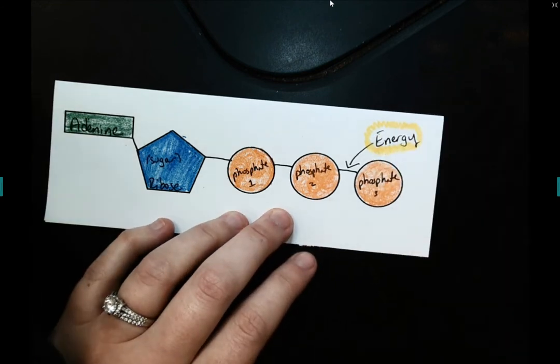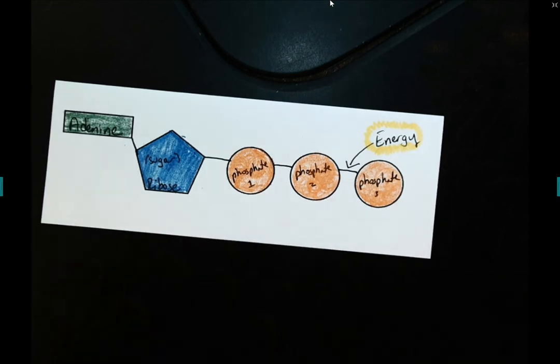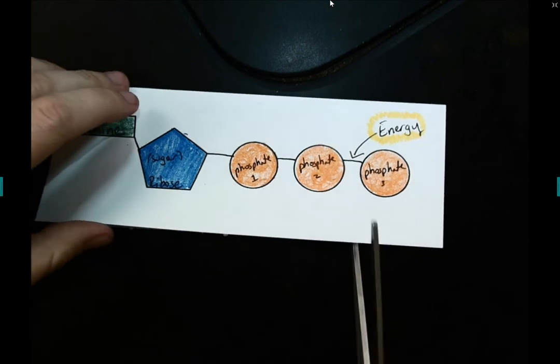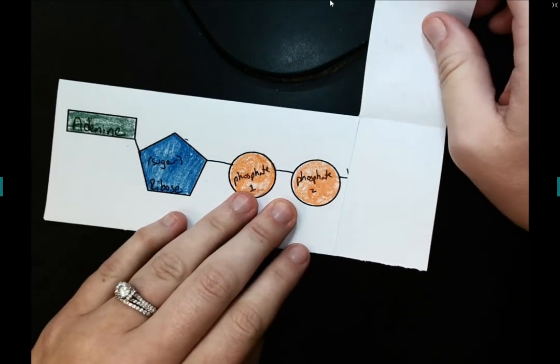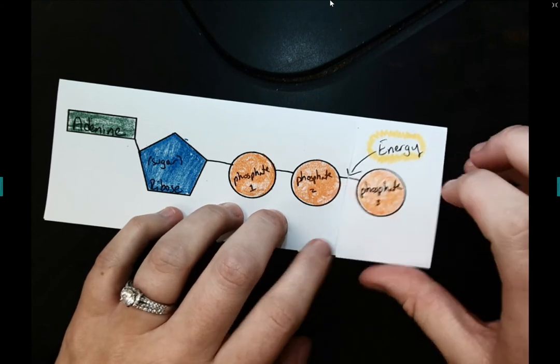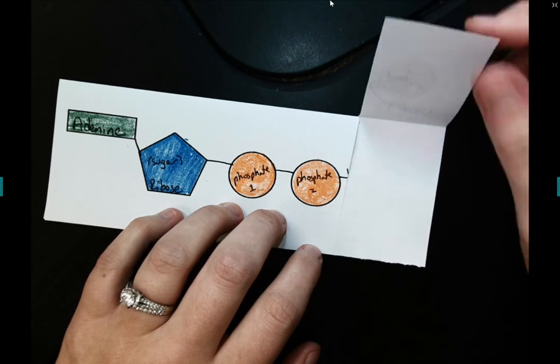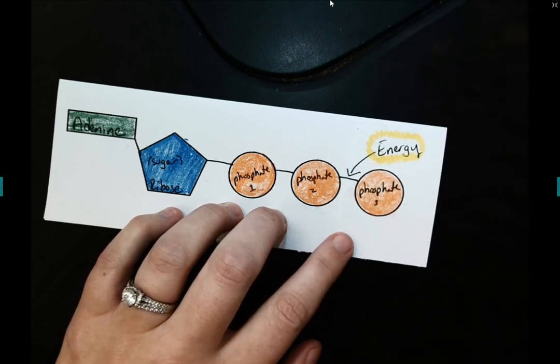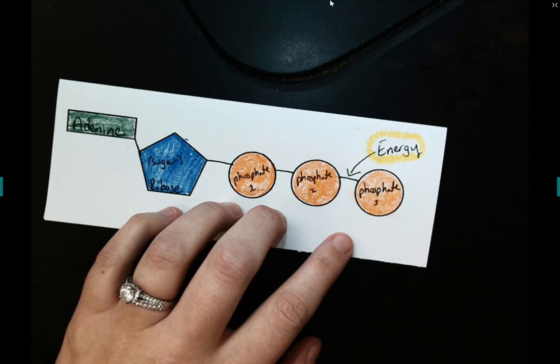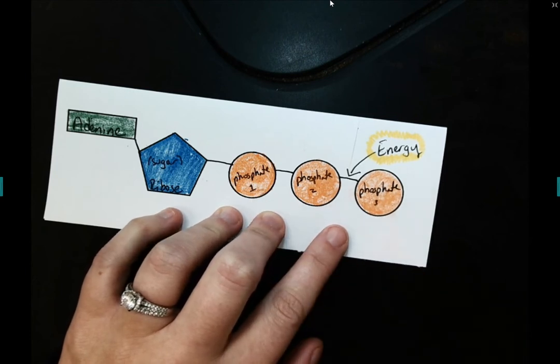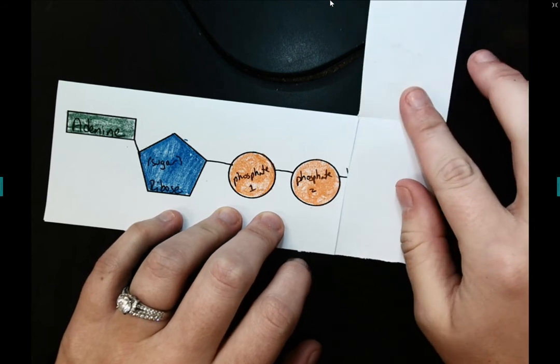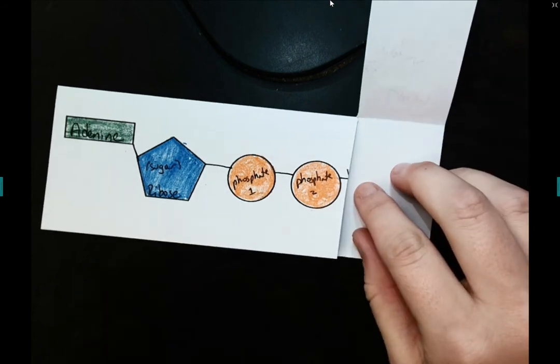So there is my energy molecule. So when we have enough energy, we have an ATP molecule. But let's say we want to use that energy. We want to move our muscles, blink our eyelids, have our brain function. What our body will do is it will sever that third phosphate. And by cutting this bond, we are releasing the energy so that it can be used by our body to function. So when we have the full molecule with all three phosphates, the energy is stored. When we sever that last bond, the energy is released.